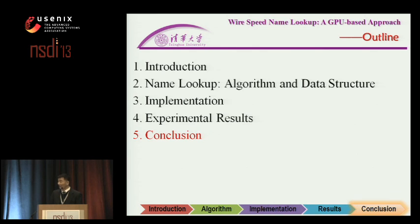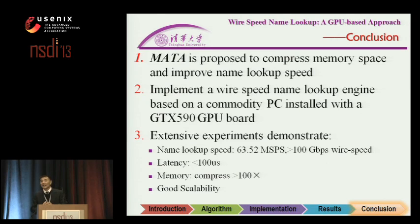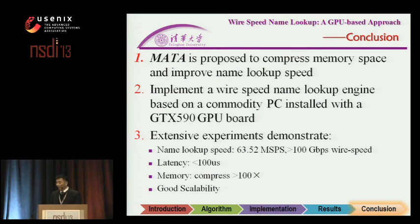To conclude: we proposed a smart algorithm and data structure called MATE, which greatly compresses memory occupation while increasing lookup speed. Our implemented lookup core engine achieves good results: more than 100 gigabits per second lookup speed, latency restricted to less than 100 microseconds, and a memory reduction ratio of more than 100 times. Results also show good scalability. Thank you very much.